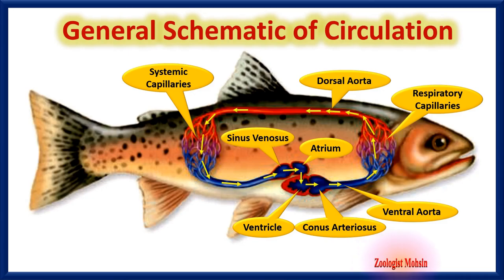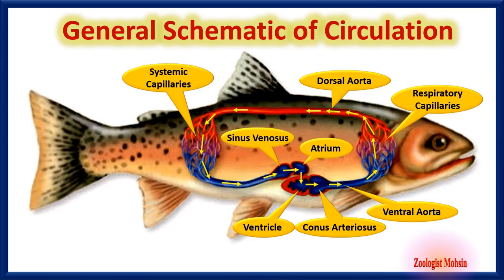You have observed that the circulation has a single loop or pathway — that is why such circulation is termed single circuit circulation.